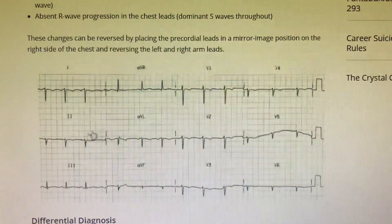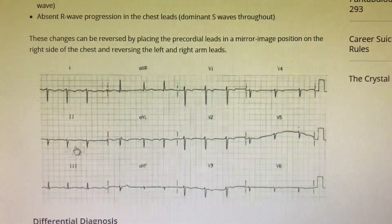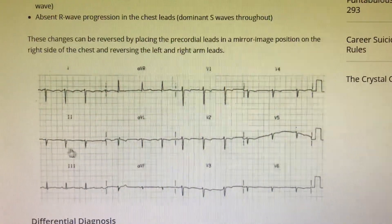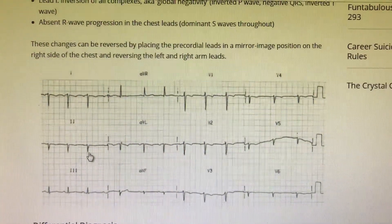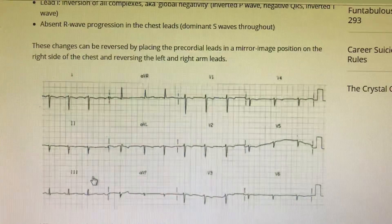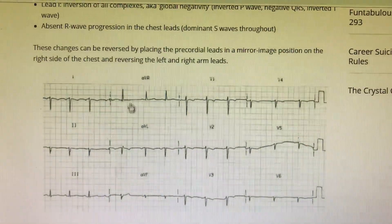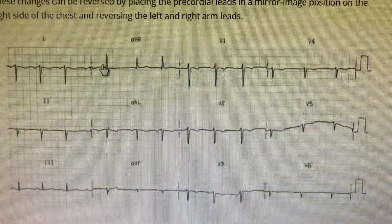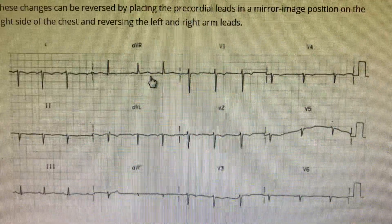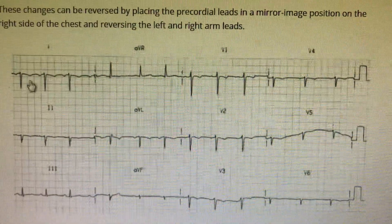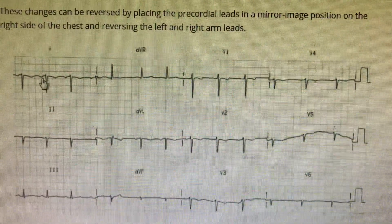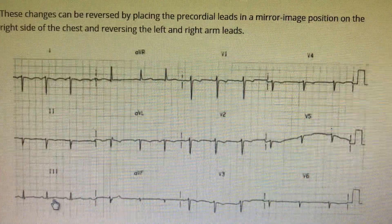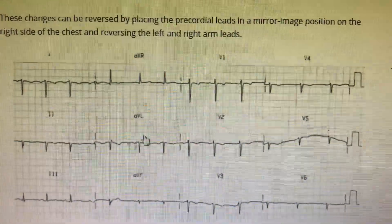Now looking at another similar ECG: immediately looking at lead II, there is a deep negative deflection, so you suspect the axis is not right. Then going to AVR, everything is positive — P is positive, QRS is positive, T is positive. Then you go to lead I and AVL — everything is inverted.